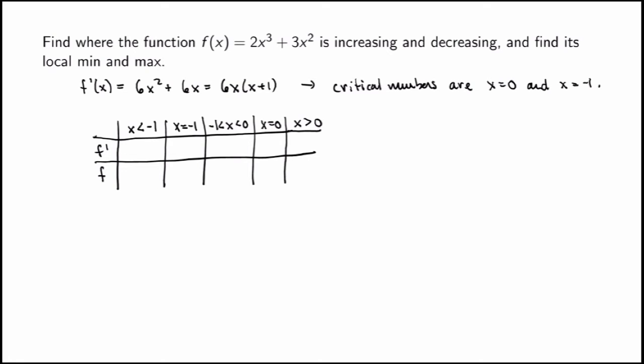The derivative is zero at the two critical points. For x less than −1: x is negative and x + 1 is also negative, so negative times negative gives positive — f prime is positive, meaning f is increasing. For x between −1 and 0: x is negative but x + 1 is positive, so the product is negative — the function is decreasing.